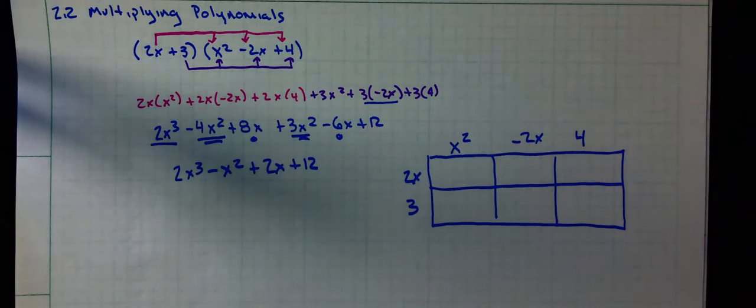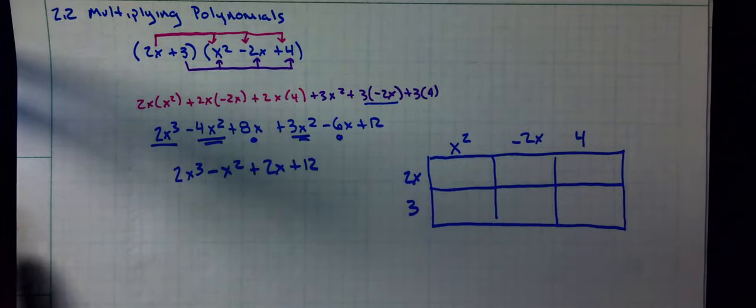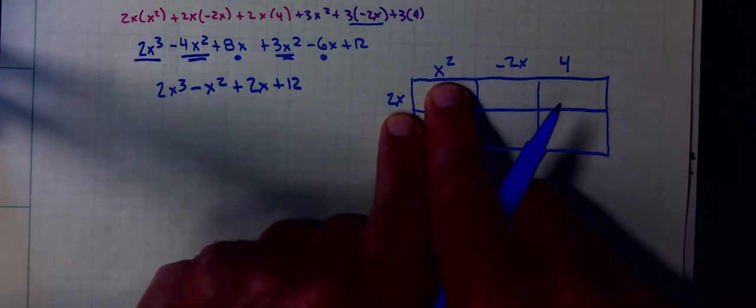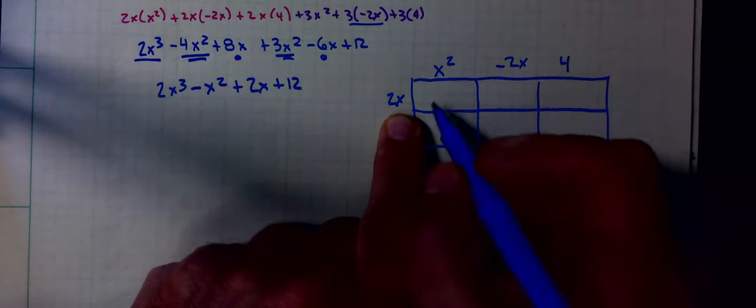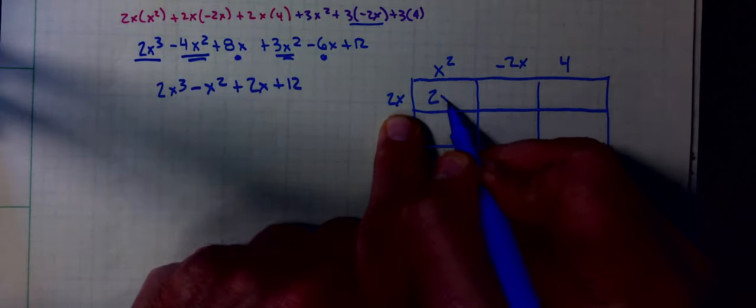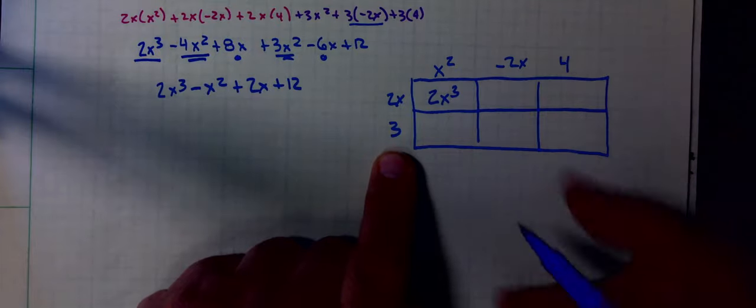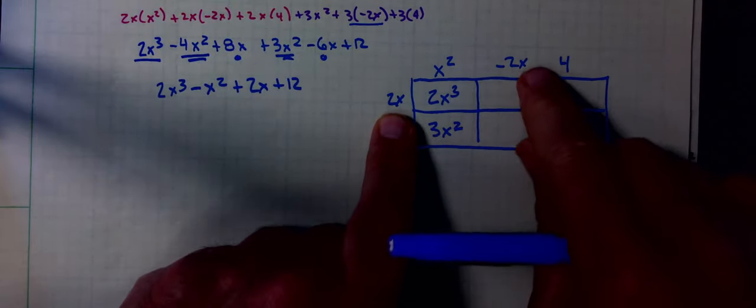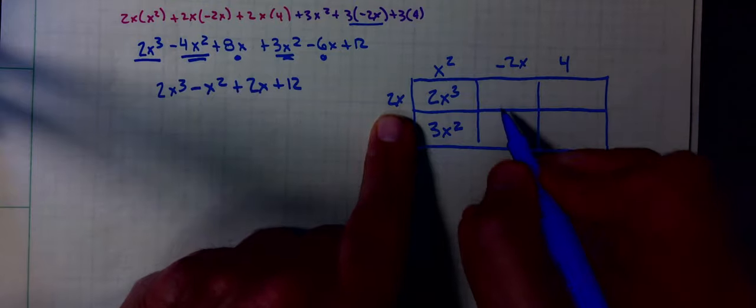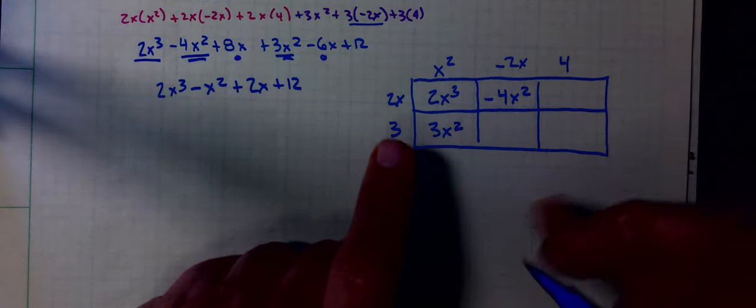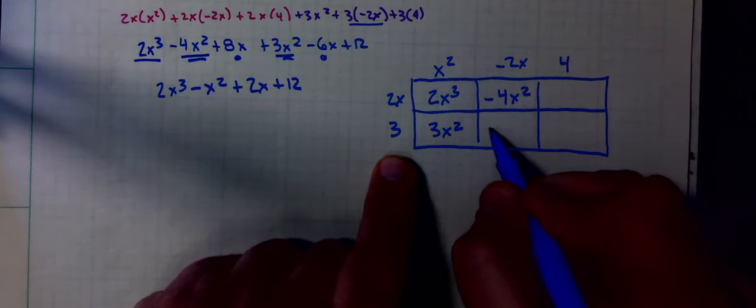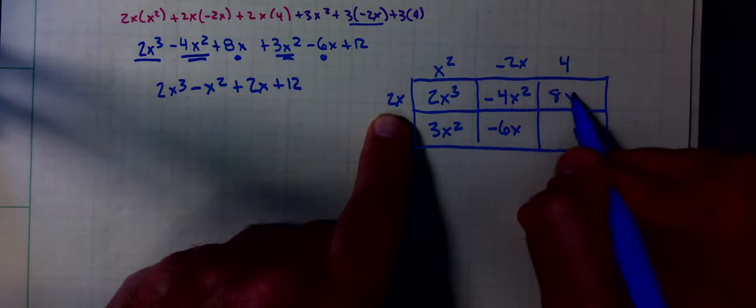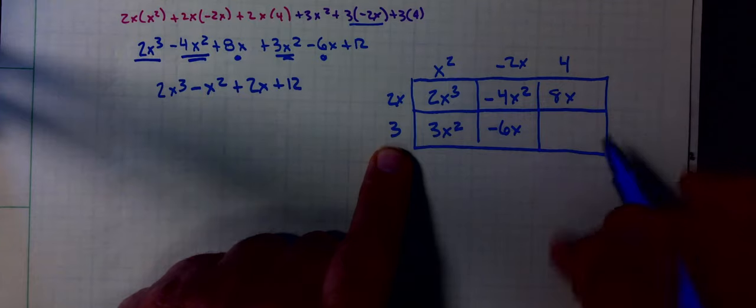What I'm going to do is I'm now going to fill in the boxes with the resulting multiplications. The 2x times the x squared is 2x cubed. 3 times x squared is 3x squared. 2x times negative 2x is negative 4x squared. 3 times negative 2x is negative 6x. 2x times 4 is 8x. 3 times 4 is 12.